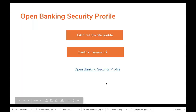The open banking security profile is based on the FAPI read-write API specification. The OAuth2 framework is the underlying base for ensuring security in open banking. It is important that all participants in this ecosystem follow a common standard so that open banking can be adopted by various banking platforms. OB has adopted the FAPI profile with necessary modifications to ensure sufficient security for financial data transactions.